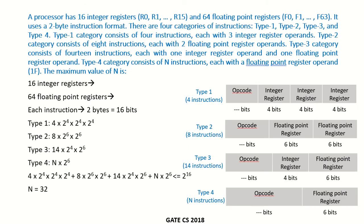Let's take another example. We have a processor with 16 integer registers. Any processor supporting floating point operations has separate integer and floating point registers. The integer registers are R0 to R15, so log₂(16) = 4 bits are required to address them. There are also 64 floating point registers, F0 to F63, requiring log₂(64) = 6 bits to represent them.